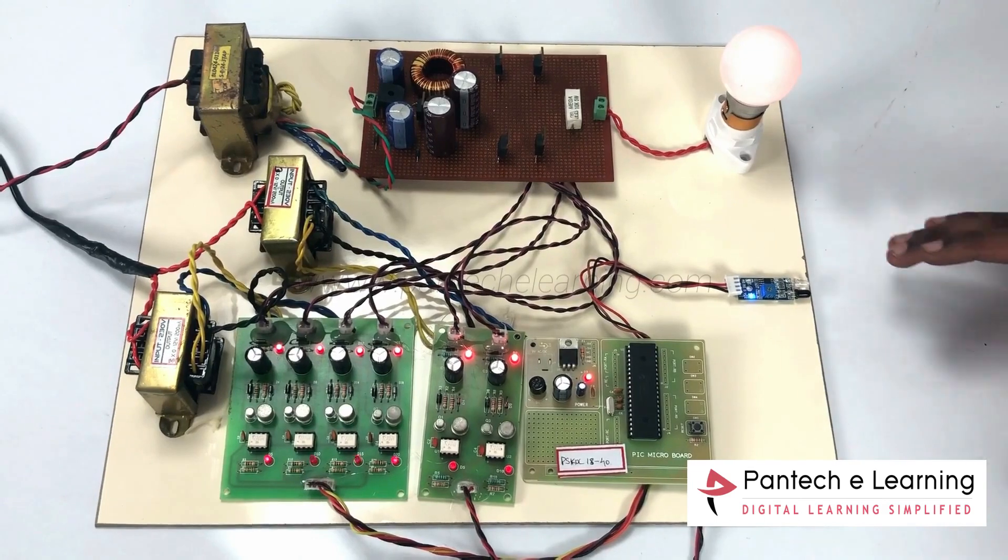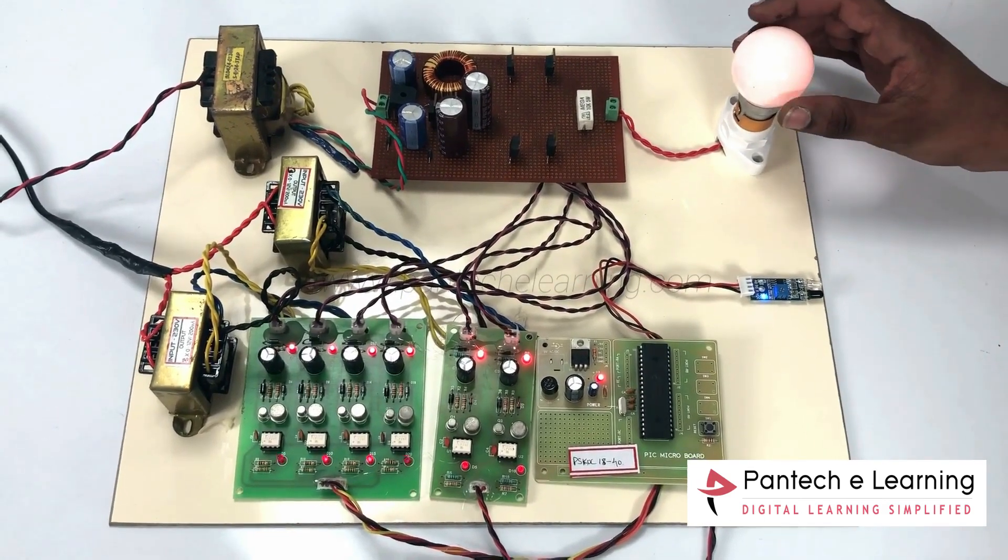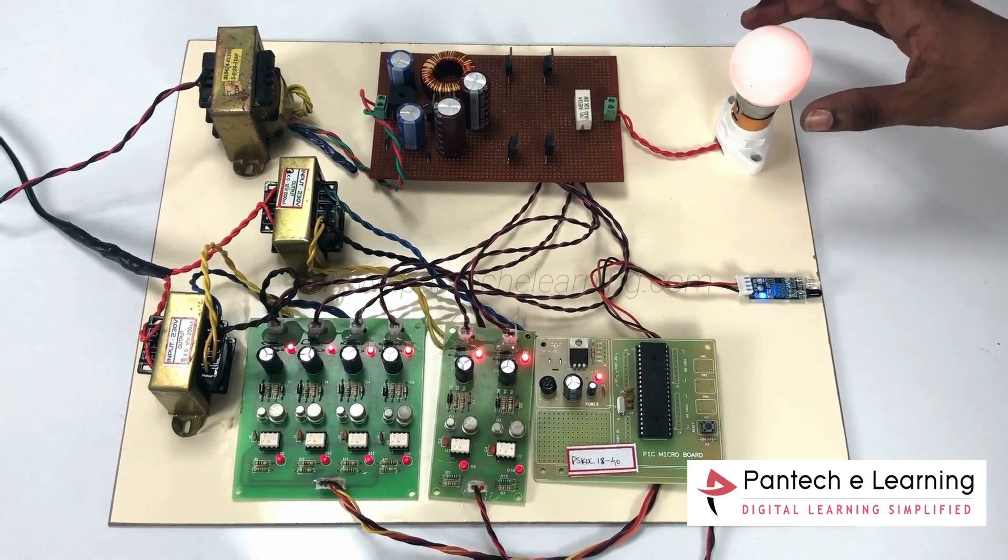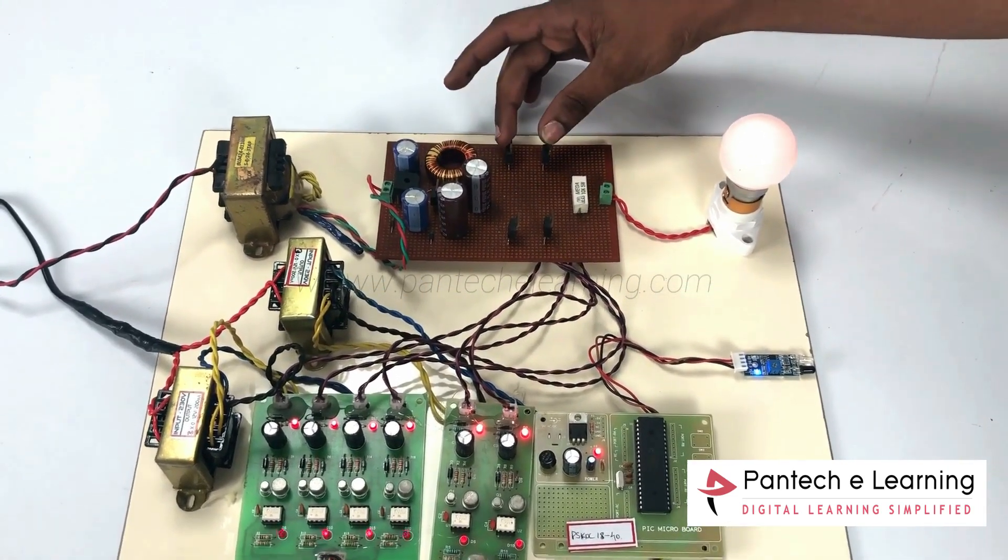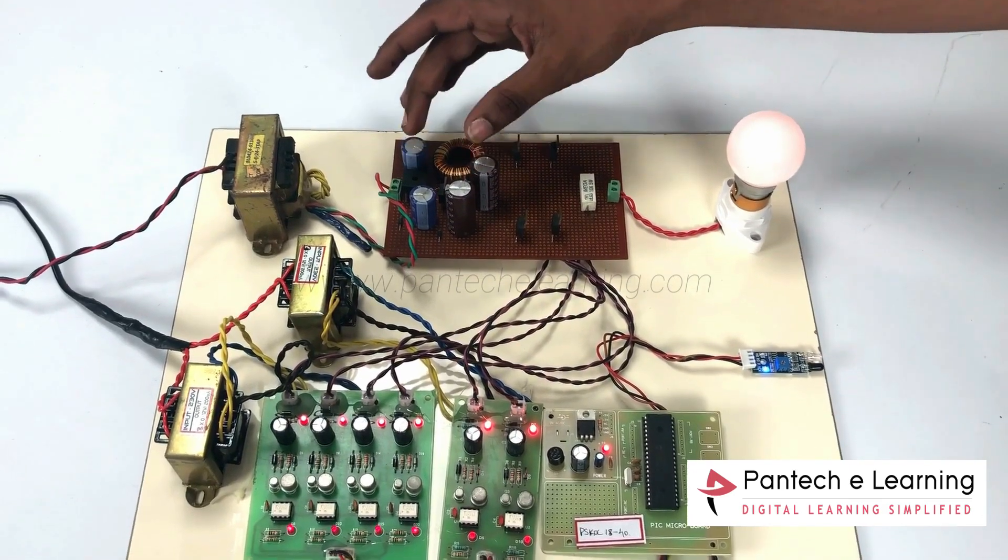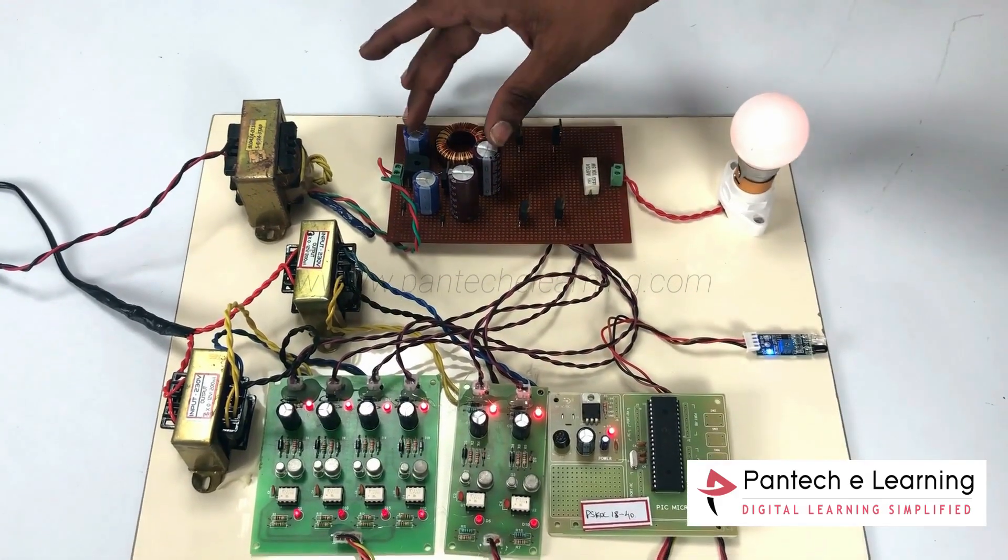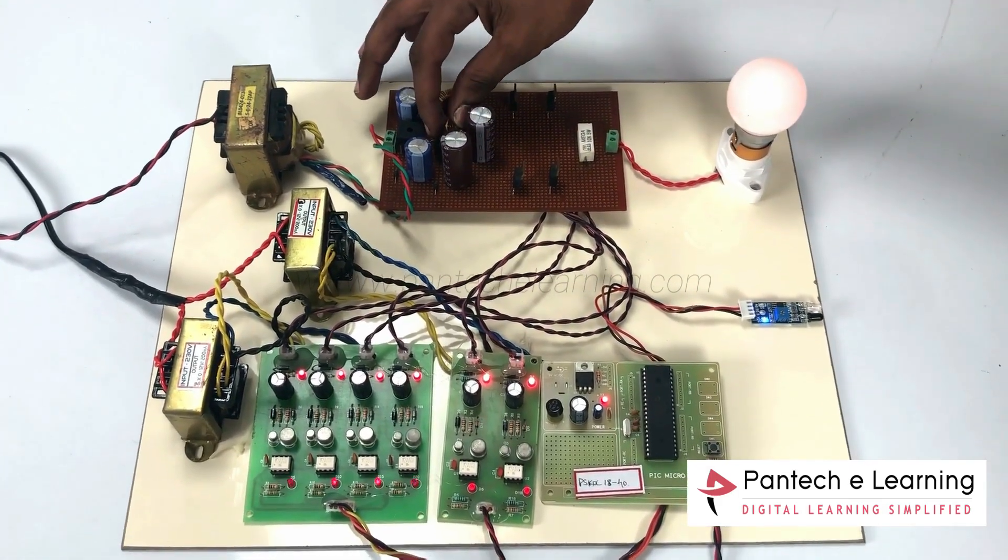First of all, for increasing the intensity, we have to increase the voltage. We have a converter and inverter. What we are doing is increasing the duty cycle of the switching pulses.